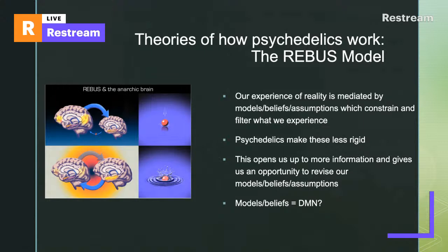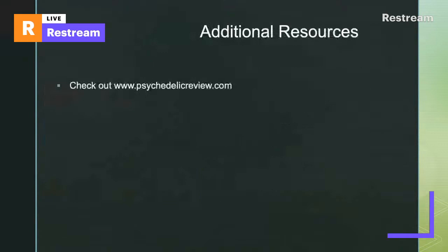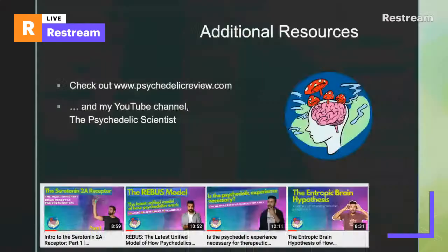That covers the two main models proposed by Robin Carhart-Harris — the Entropic Brain and REBUS — which fit well with the findings presented. For additional resources on psychedelic neuroscience, psychedelicreview.com is a great place to start, and my YouTube channel shares scientific research in a lay-person-friendly but detailed way. Thanks for your attention.